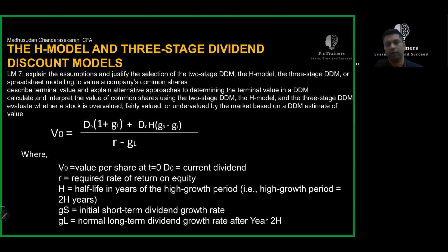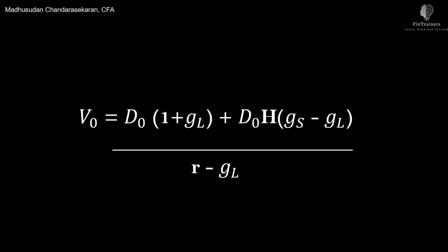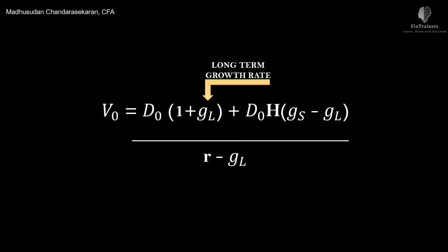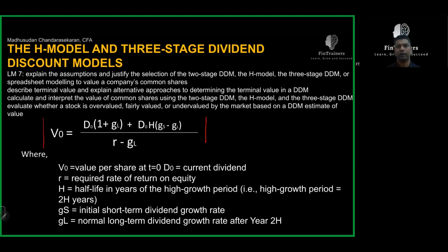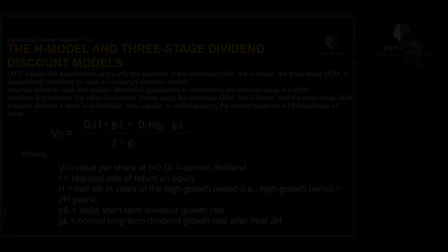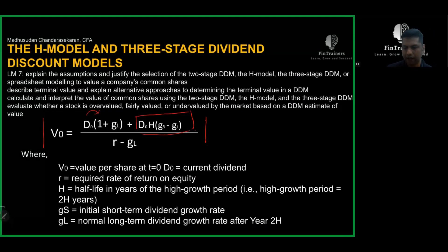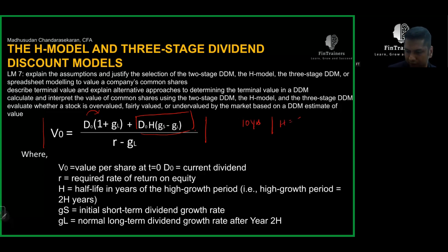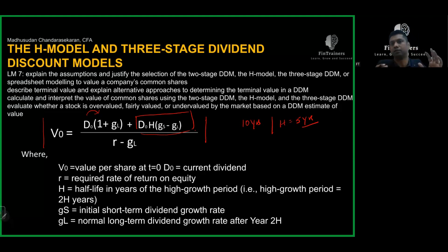In that scenario we can directly use the H Model. The formula gives the value at time zero as: next year's dividend — D0 times (1 + g_L), using the long-run growth rate — divided by (r minus g_L). The second component is the dividend multiplied by the half-life in years of the high growth period (H), then multiplied by the delta of the growth rates (g_S minus g_L).